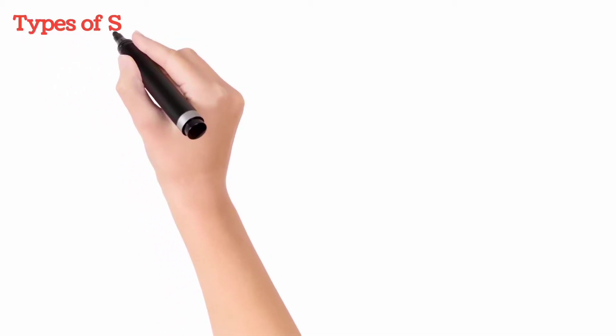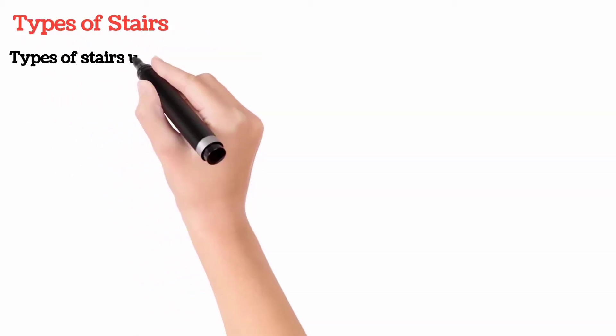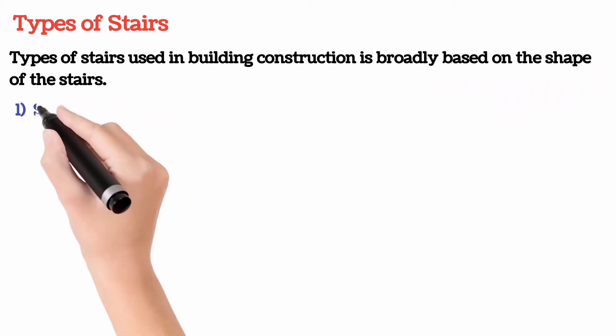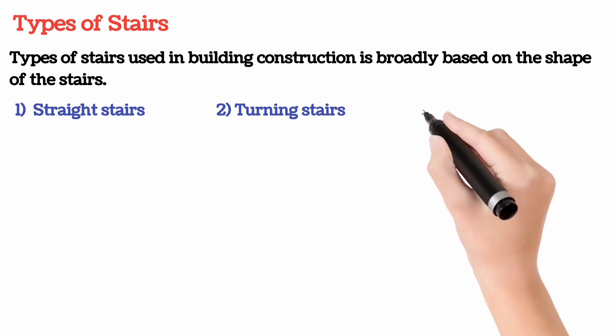Types of stairs used in building construction is broadly based on the shape of the stairs: 1. Straight stairs, 2. Turning stairs, 3. Continuous stairs.